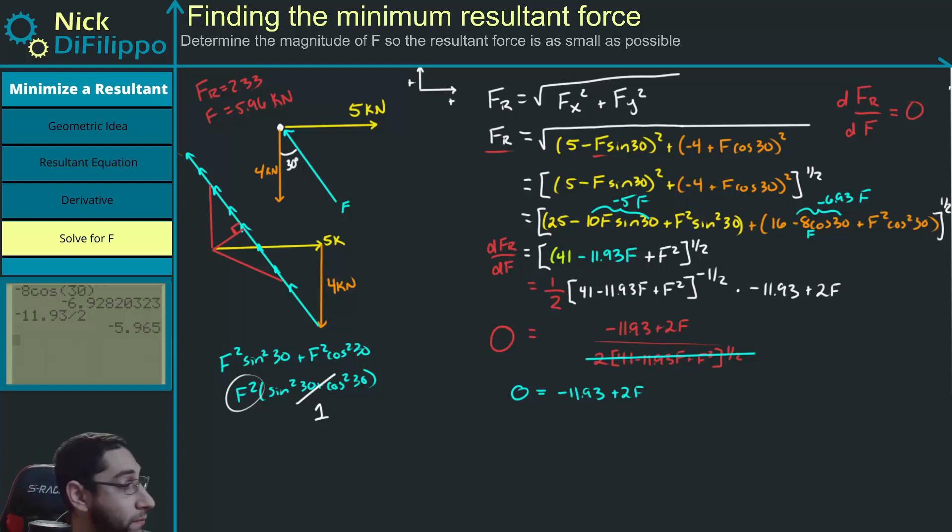And we get, oops, it's 11.93 because it is moved to the other side of the equation. So 11.93 divided by 2. We get this is equal to 5.965. So F is equal to 5.965 kilonewtons. F is equal to 5.96.